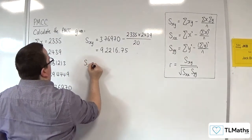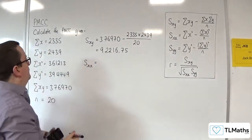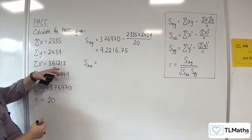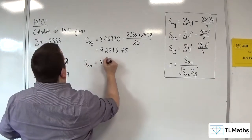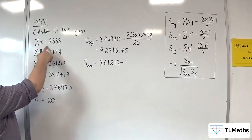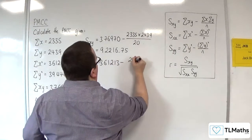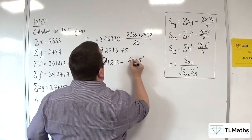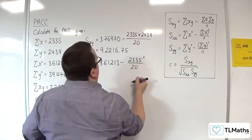Okay, then we've got S_XX. Okay, so we've got the sum of X squared. So, 361213. Take away sum of X, 2335. So, it's 2335 squared over N. So, 20.